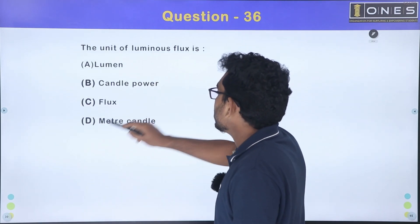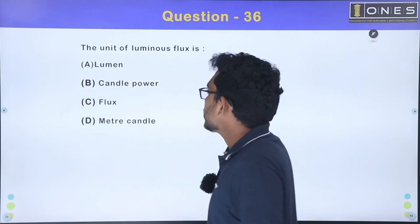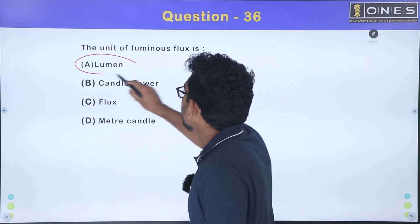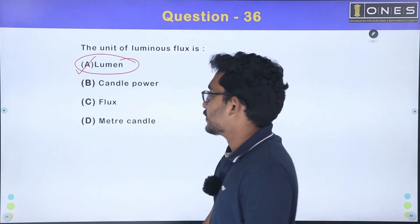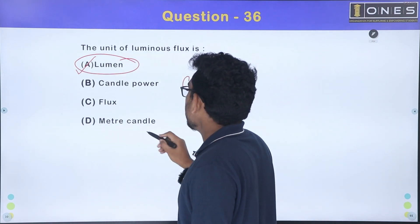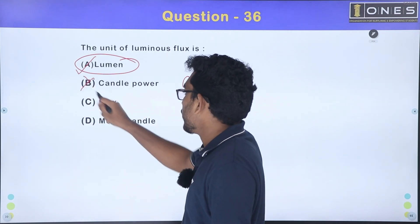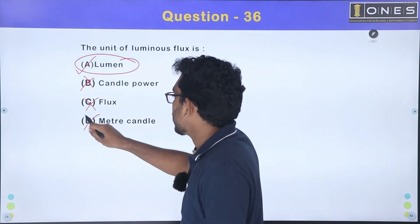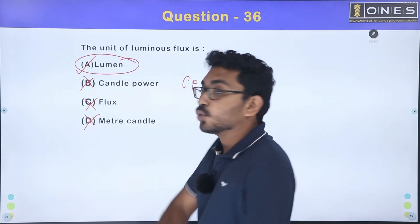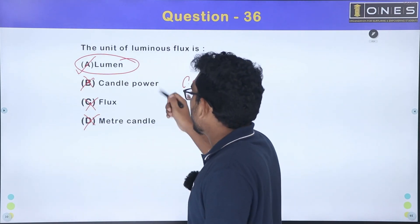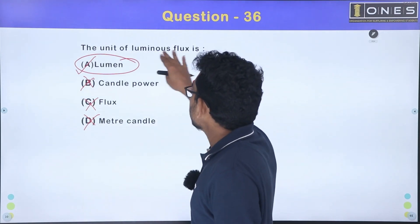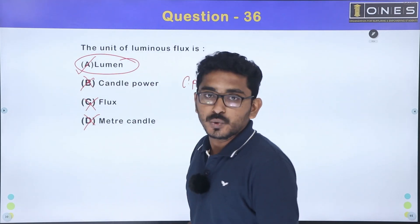Next question about luminous flux unit. The unit of luminous flux is lumen. Candle power, meter candle, and lumen are terms in photometry. The correct unit for luminous flux is lumen.